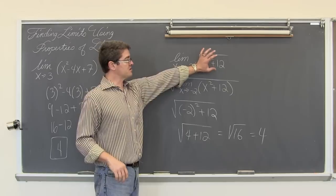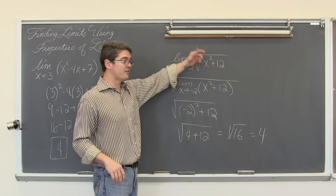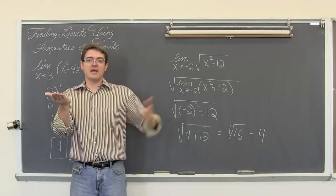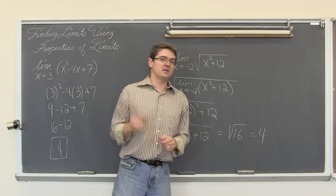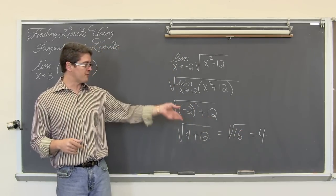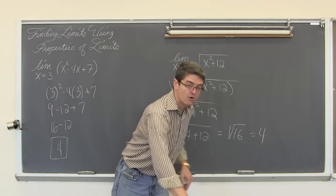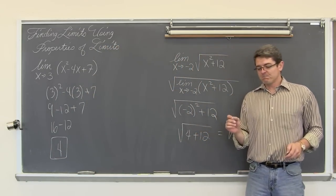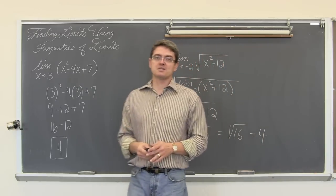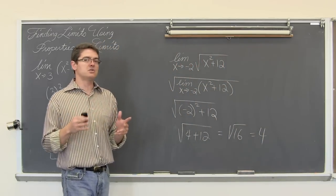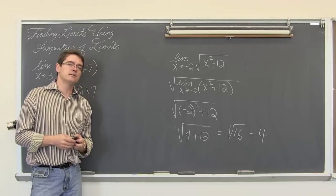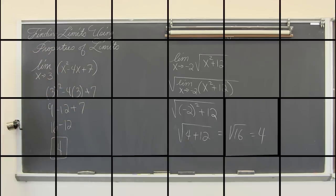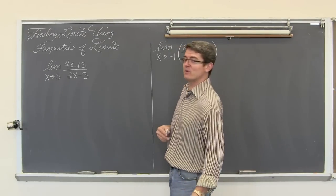So this function — if you were to graph f(x) equals the square root of x squared plus 12 — as you approach negative 2 from the left and from the right, you are going to have both the left and right limits equal to 4, thus the two-sided limit is equal to 4. The last examples are all going to deal with quotients, because that is really one of the biggest issues when trying to find limits — you cannot divide by zero.